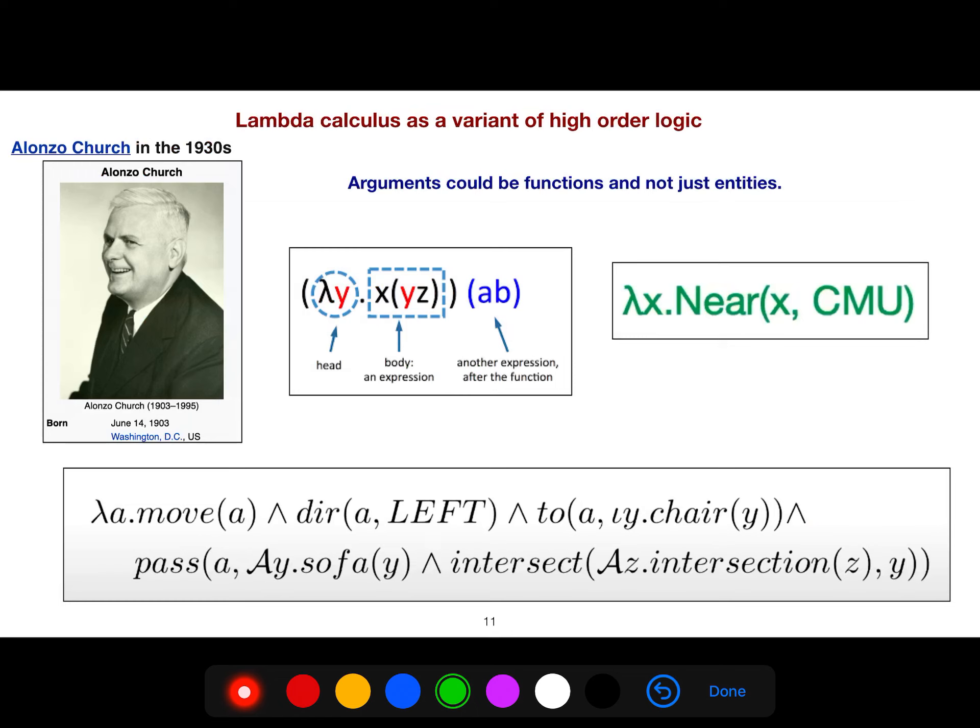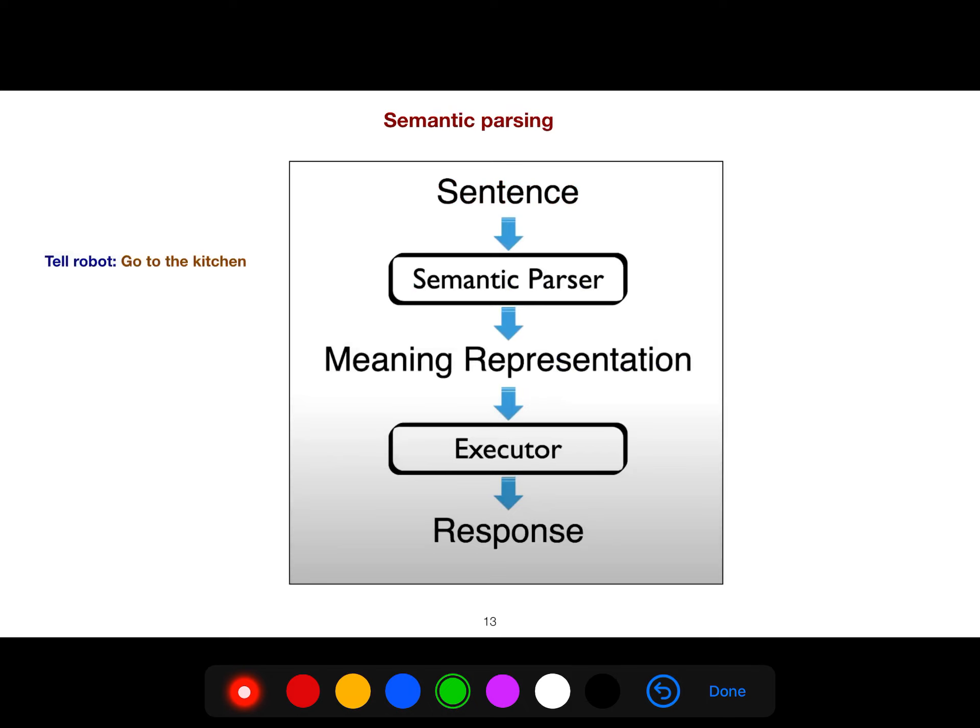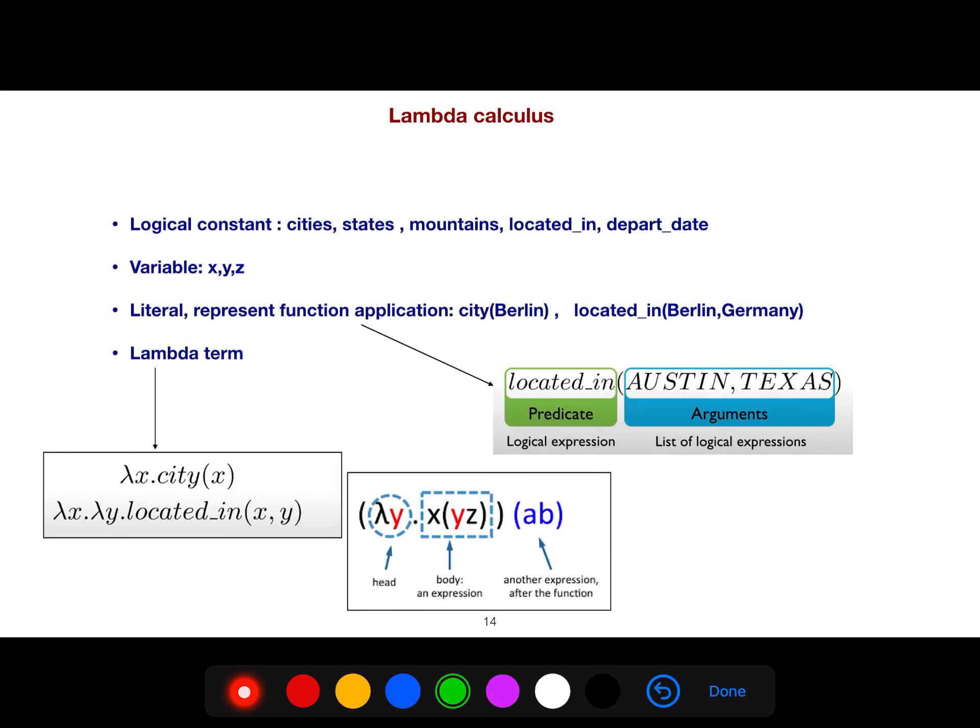Lambda calculus can be seen as a variant of higher-order logic. This is an example of lambda reduction, because you can always ignore and create a simpler language. Semantic parsing, for example: you tell the robot to go to the kitchen. It should understand. This one is language understanding and meaning representation, then executor. Lambda calculus is really important.